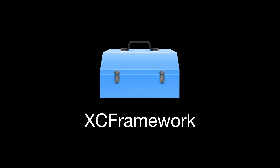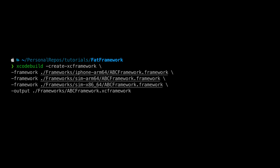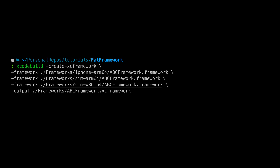I went ahead and created a Swift framework for iPhone for x86-64, which is for Intel, and an ARM64 simulator framework for Intel machines. I used the Xcode build command to create an XCFramework and hit return. After hitting return, I got an error saying that x86-64 and ARM64 simulator represent two equivalent library definitions, meaning I could not use both in the same XCFramework.